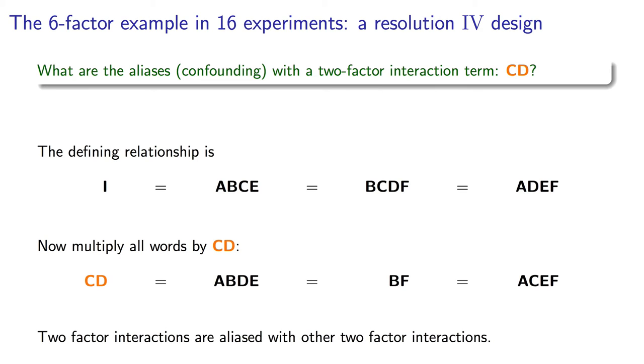It seems that this two-factor interaction is only aliased with another two-factor interaction. If you've got lots of time on your hand, you can go try all possible combinations to go make sure that this general rule holds that two-factor interactions are only aliased with other two-factor interactions and higher in this design.